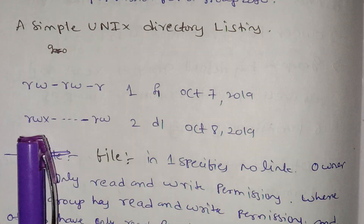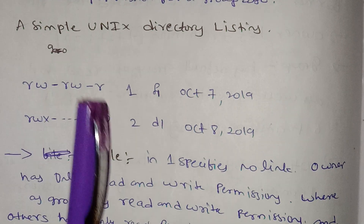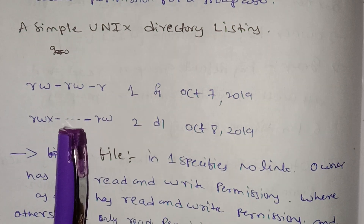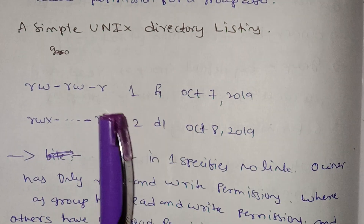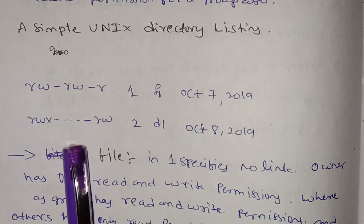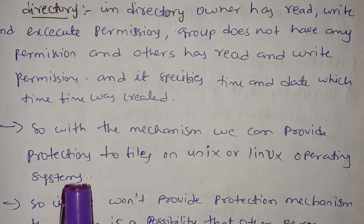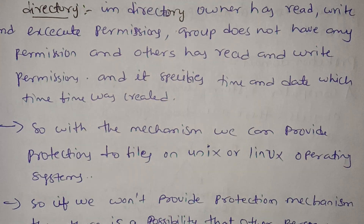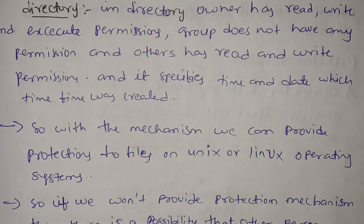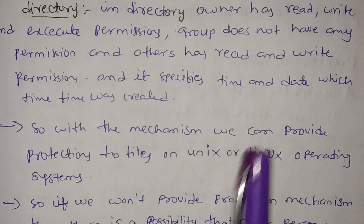The owner has read, write, and execute permissions. The group has some permissions. Others have read and write operations. With this protection mechanism, we can provide protection to files on Unix and Linux operating systems.